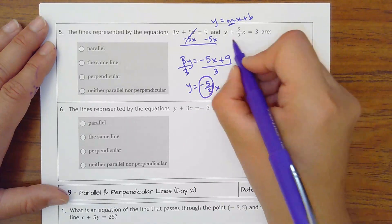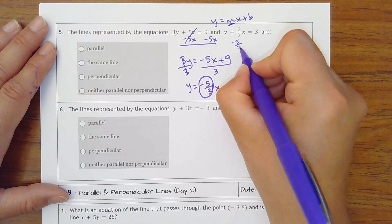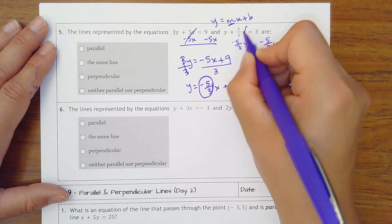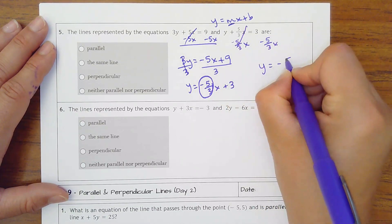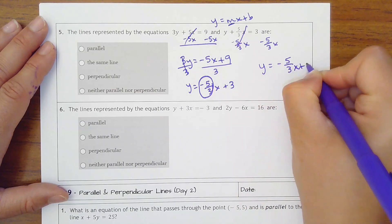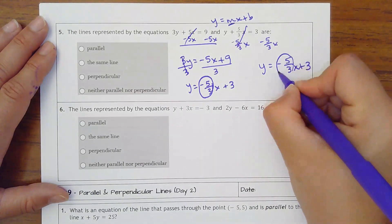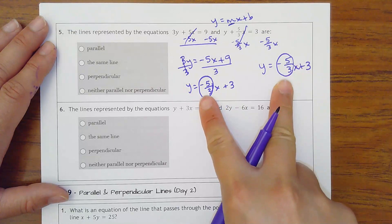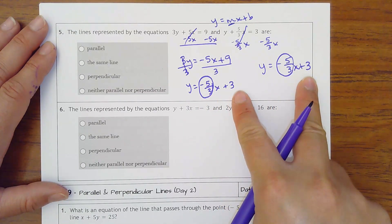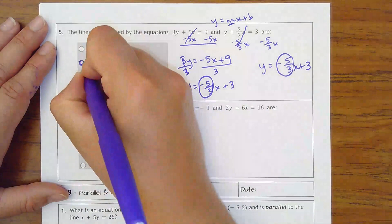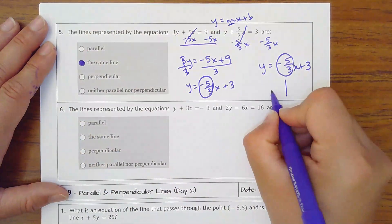Okay, this line is very close. All I need is to subtract the 5 thirds x over. And then there's my slope. They're exactly the same slope. So they could be parallel. But look, they're the same y-intercepts too. So these are actually the exact same line.